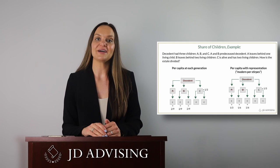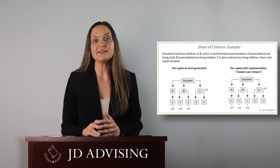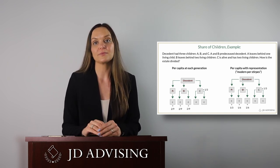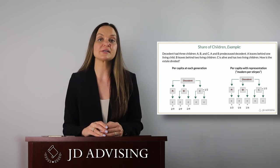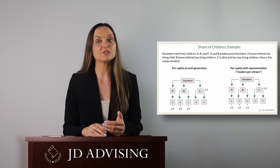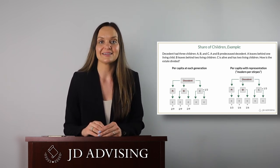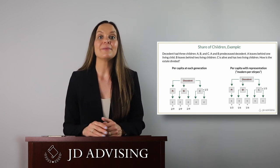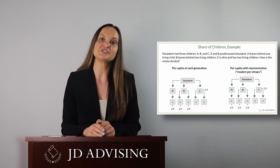The first is per capita at each generation. The key principle to keep in mind with this rule is that those in the same generation always inherit the same amount. To figure out how the property should be divided, find the first generation where someone is living. Then give a share to each living person, as well as a share to each child in that generation who predeceased the decedent but left behind surviving children of their own. Then combine all of the shares of the deceased persons and divide it up equally at the next generational level.